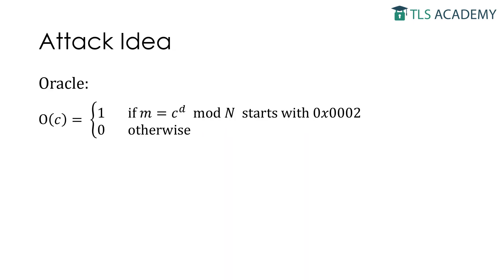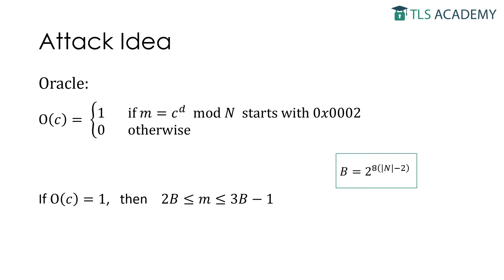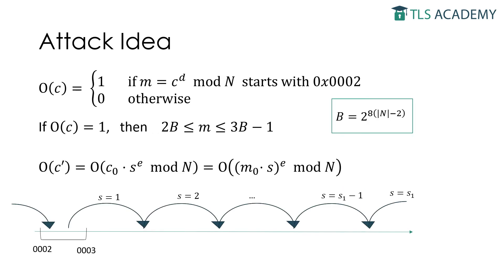Bleichenbacher's attack enables an adversary who is in possession of a ciphertext C0 to recover the encrypted plaintext M0. The only prerequisite for this attack is the ability to access an Oracle O, that decrypts a ciphertext C and responds with a 0 or a 1, depending on whether the decrypted message M starts with the 2 bytes 00 and 02 or not. If the Oracle replies with a 1, we know that the plaintext message corresponding to the modified ciphertext is between 2B and 3B-1, where B is 2 to the power of 8 times the bit length of the public key N minus 2.